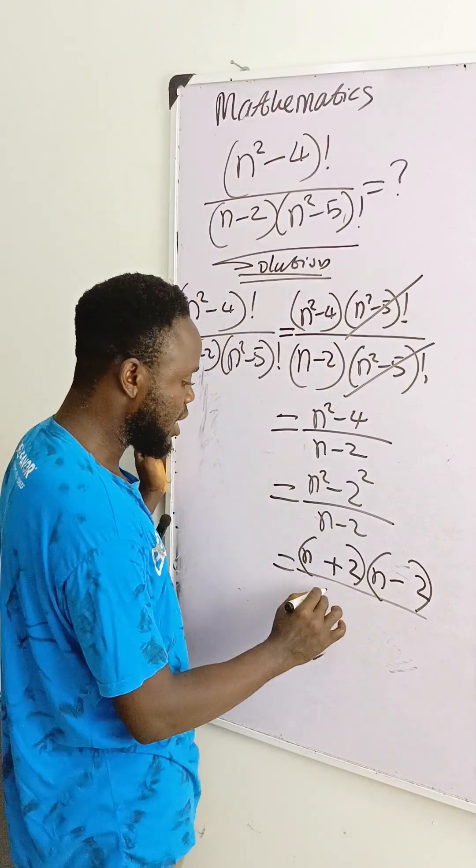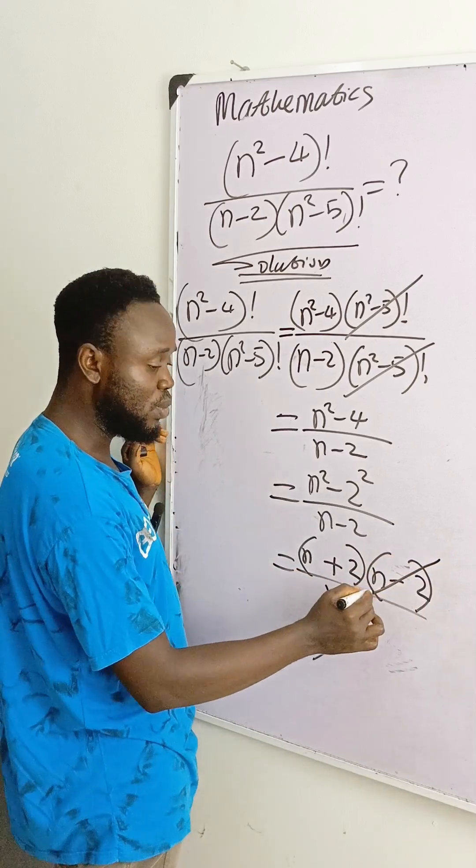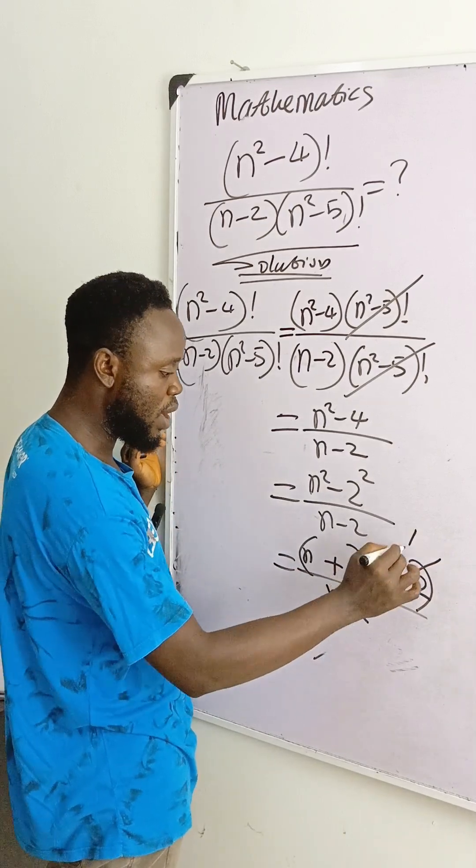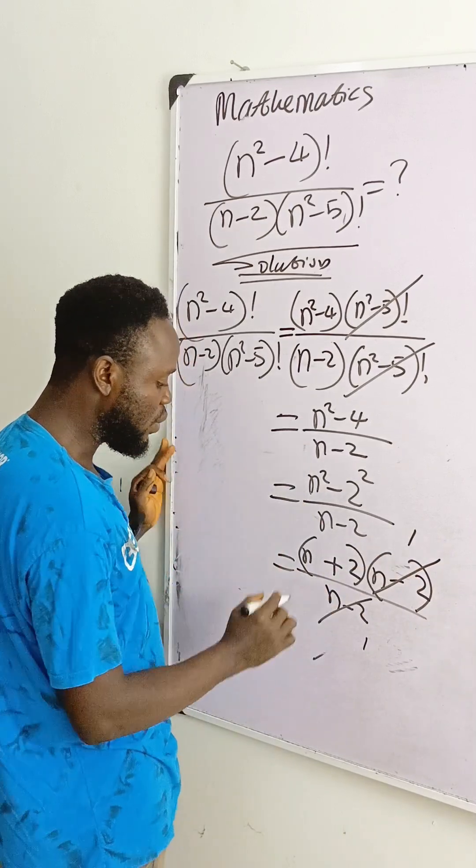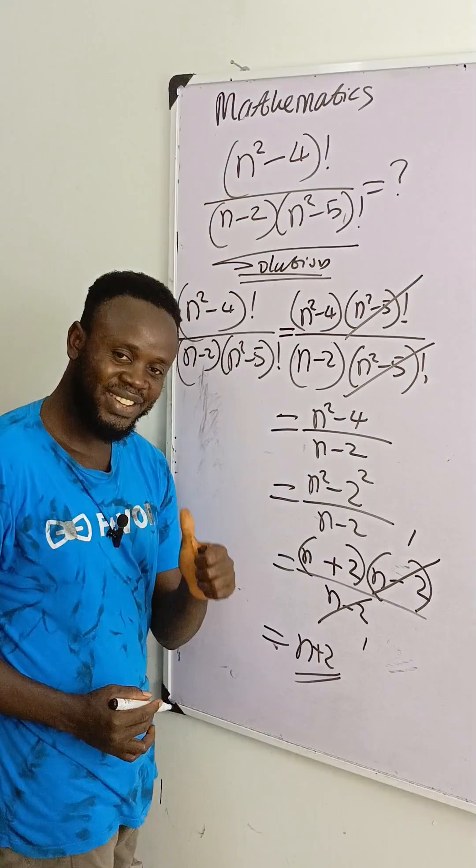This is the factored form. Then you have n minus 2 here. What can you see? n minus 2 divided by n minus 2 gives you 1. And what we are left with—our final answer is n plus 2. Thank you.